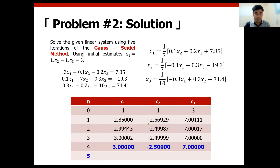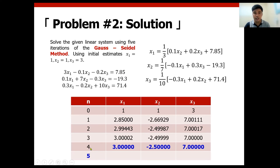So continue the process. Comparing both methods, Gauss-Seidel method is actually converging to the actual solution — which is x1 = 3, x2 = negative 2.5, and x3 = 7 — much faster compared to Gauss-Jacobi. On Gauss-Jacobi method, we arrive at the actual value under 5 iterations. However, in Gauss-Seidel, we have converged at the solution at only 4 iterations.